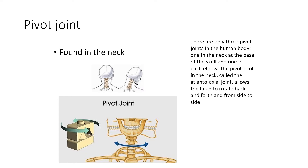The pivot joint allows us to move our head from side to side and towards our shoulders. There are only three pivot joints in the human body: one in the neck at the base of the skull and one in each elbow. The pivot joint in the neck, called the atlanto-axial joint, allows the head to rotate back and forth and from side to side.